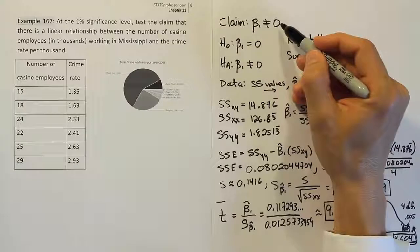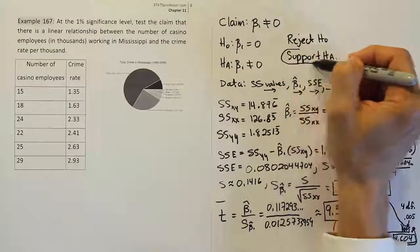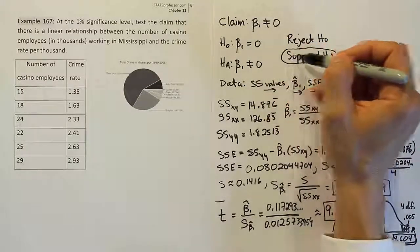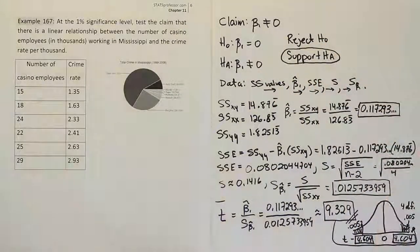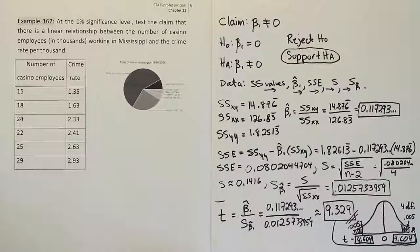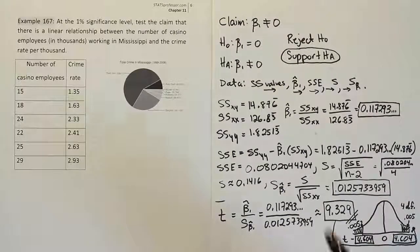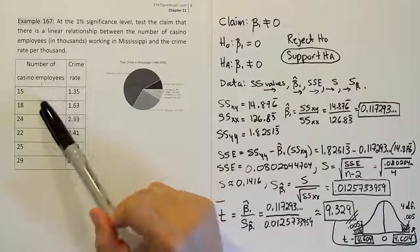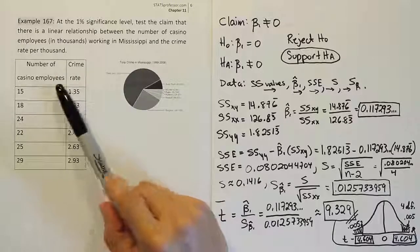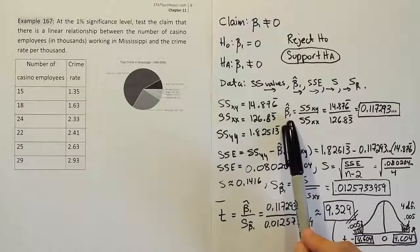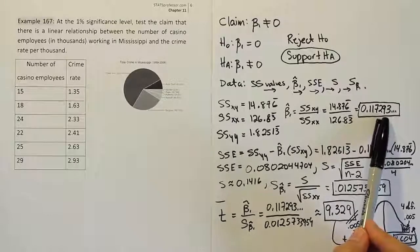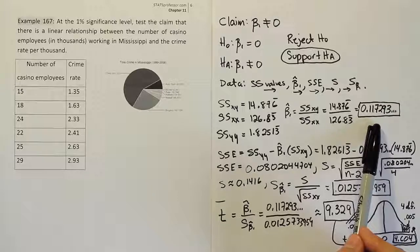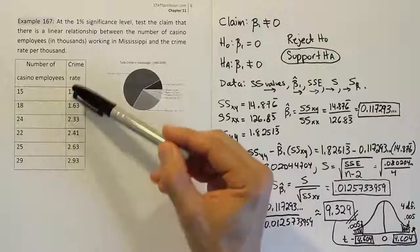Looking at our claim, we can see our claim is the same as Hₐ. So again, which happens often, we will support the claim here. Or in other words, we will word our answer according to the alternative hypothesis. The sample data support the claim. So what does it mean to say we support the claim here? Well, it simply means that ultimately we're saying there is some linear relationship between the number of casino employees and the crime rate. And further, we can look at this slope here. And you can see the slope is positive. So we could even assert that there's a positive linear relationship between these two variables. And let's remember what positive relationship means. It means as this increases, so does this. It means as this decreases, so does this.